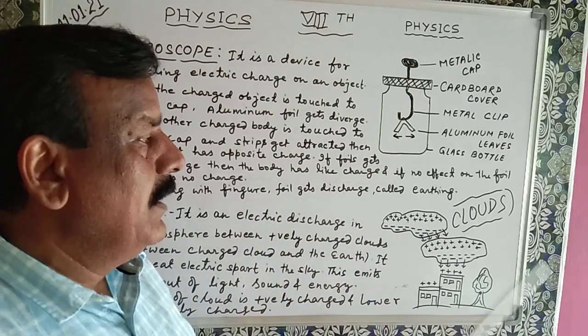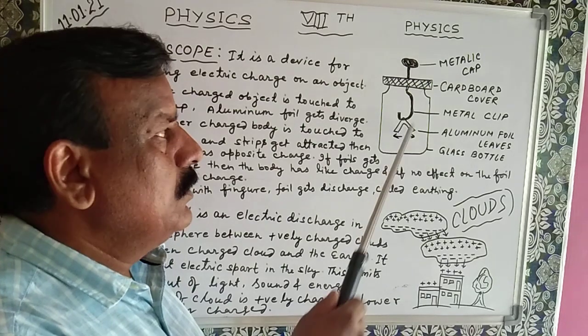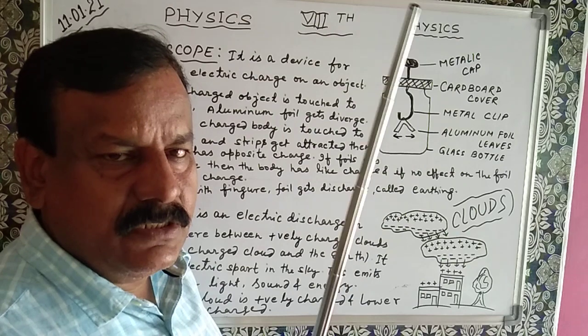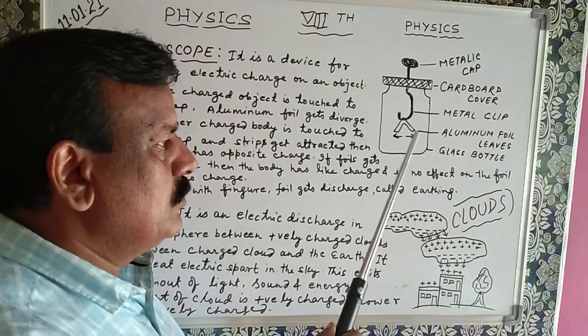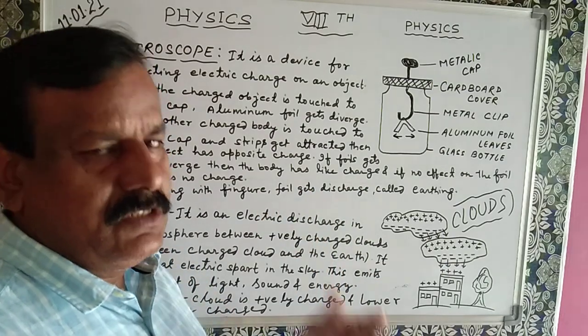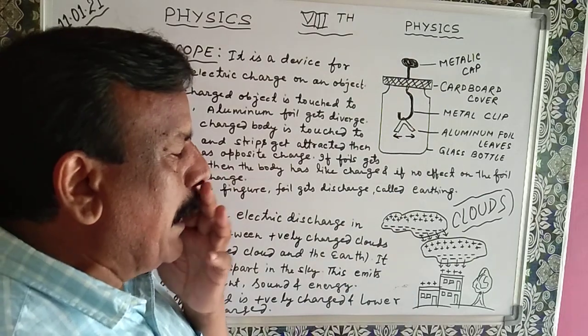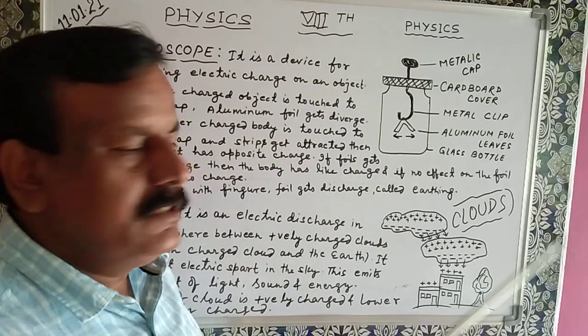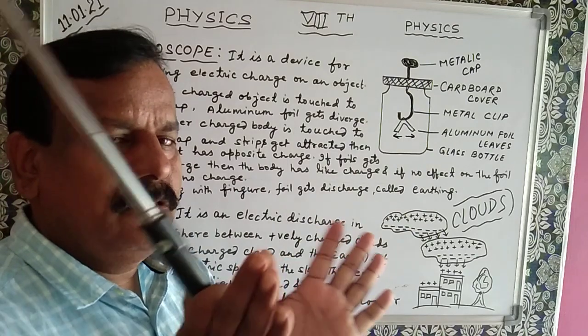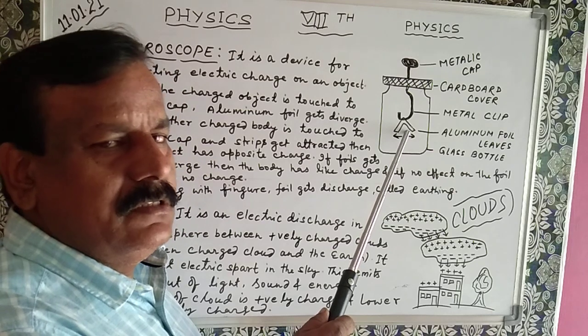As previously it was having negative charge, so that object is having positive charge because there is an attraction between opposite charges. So if foils come close and attract each other, then the object has positive charge. And suppose other conditions - suppose both the leaves get more separation, more divergence, it means same charge object is there.